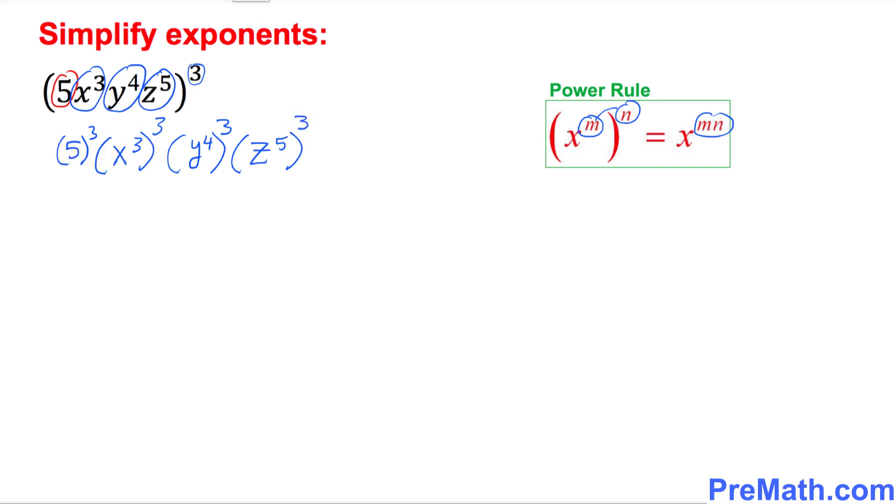Now, as far as this 5 power 3, you're going to multiply 5 three times as usual. If you multiply 5 three times, that's going to give you 125. And here when you have two repeated exponents, 3 times 3 is going to become x power 9.